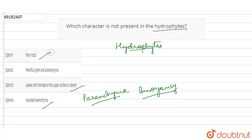They have poor roots and they don't have plentiful xylems. They don't have plentiful xylems present. This happens because they live in the water.